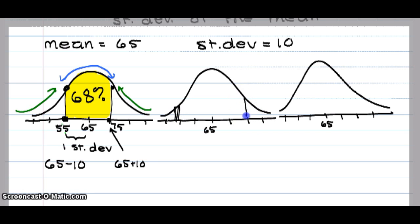And our empirical rule says that this area in here is 68%. So if I went two standard deviations down and two standard deviations up, this area would be 95%.